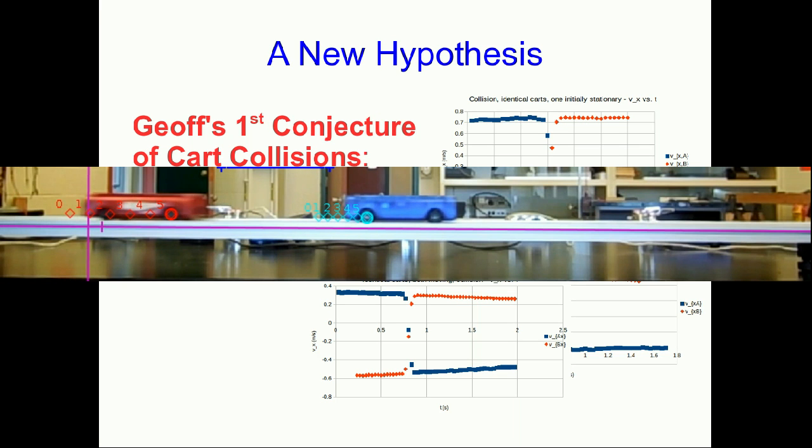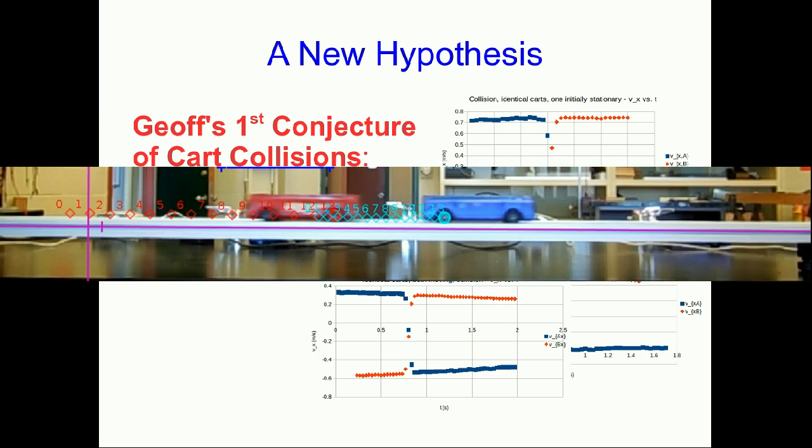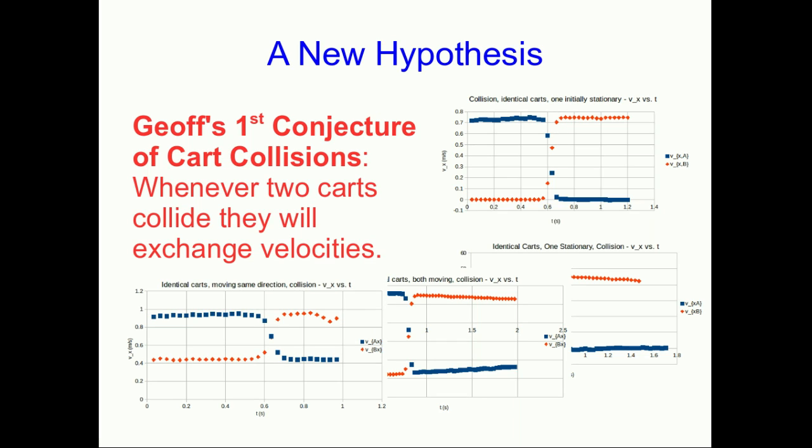We can also look at what happens when the carts are moving in the same direction. Here's our Vx versus t for that and that's looking pretty good. Again it looks like the carts have just exchanged velocities. So so far this conjecture is holding up, but we've only been varying velocities. Is there something else we could vary?